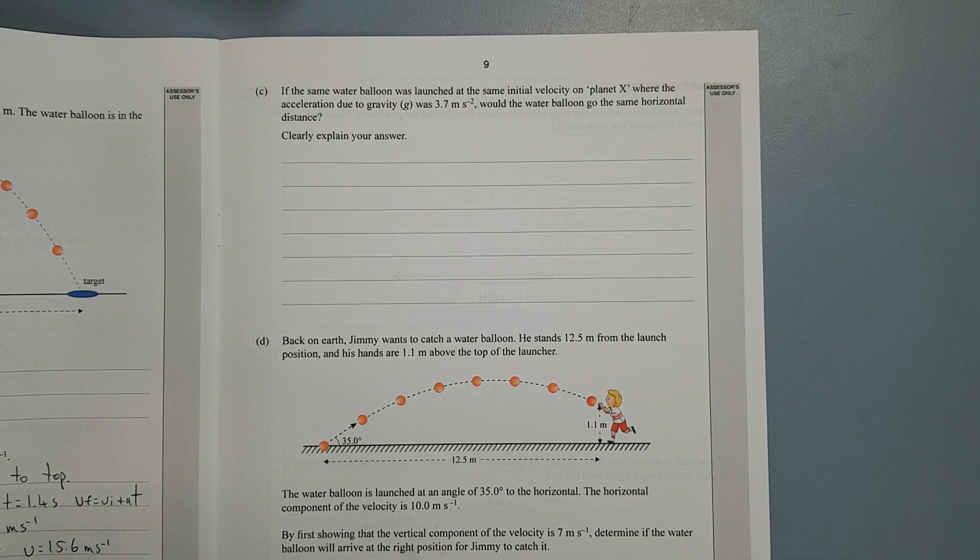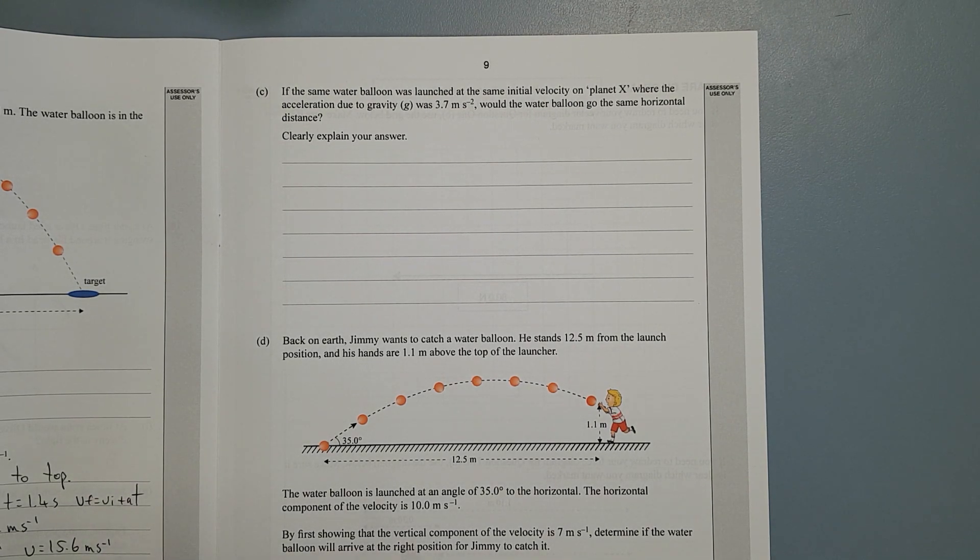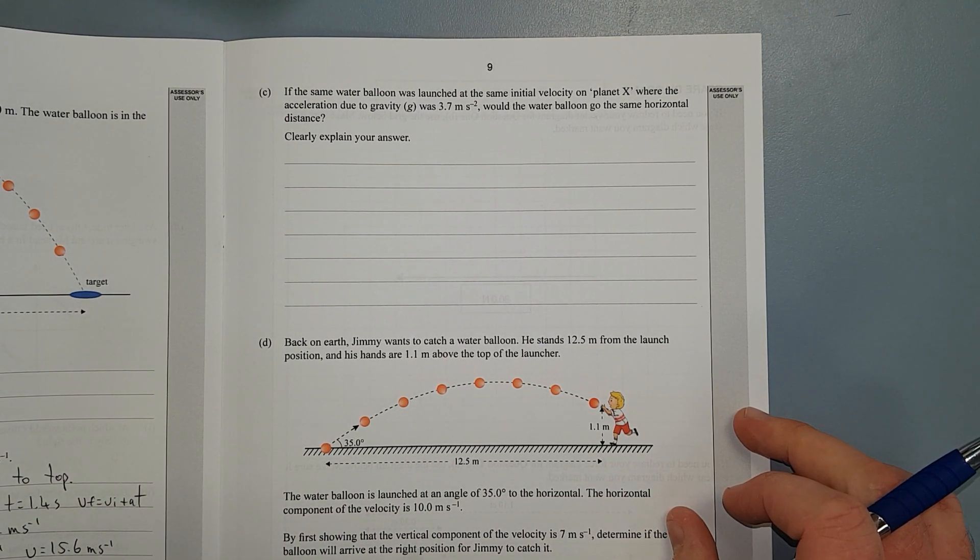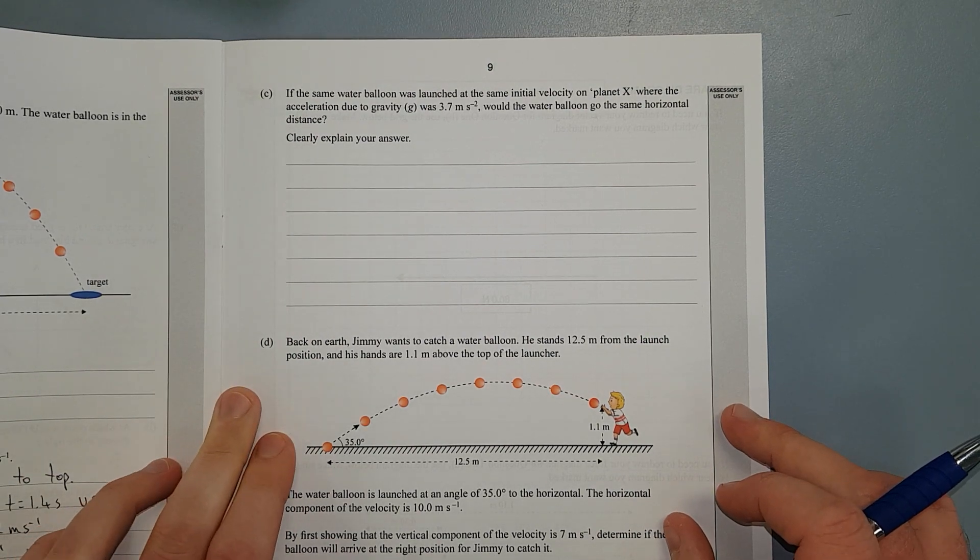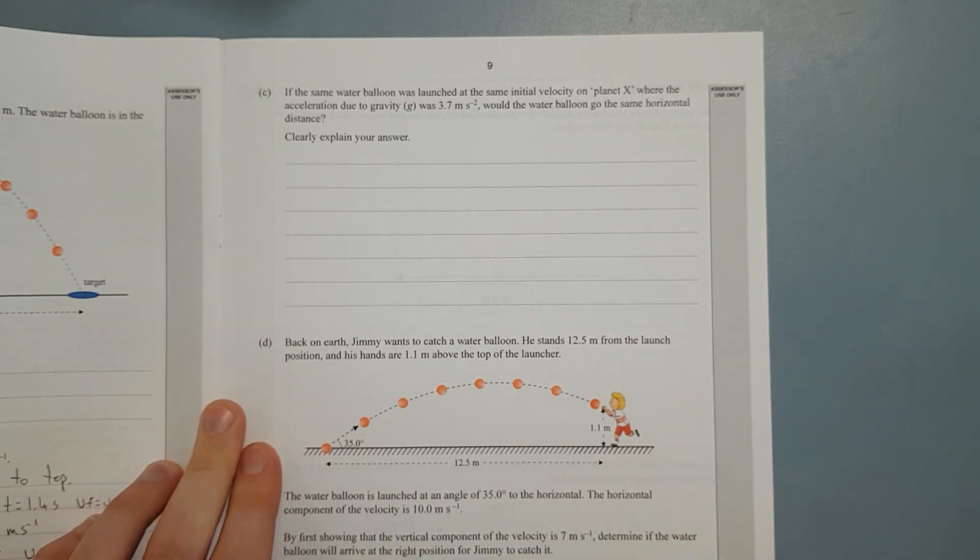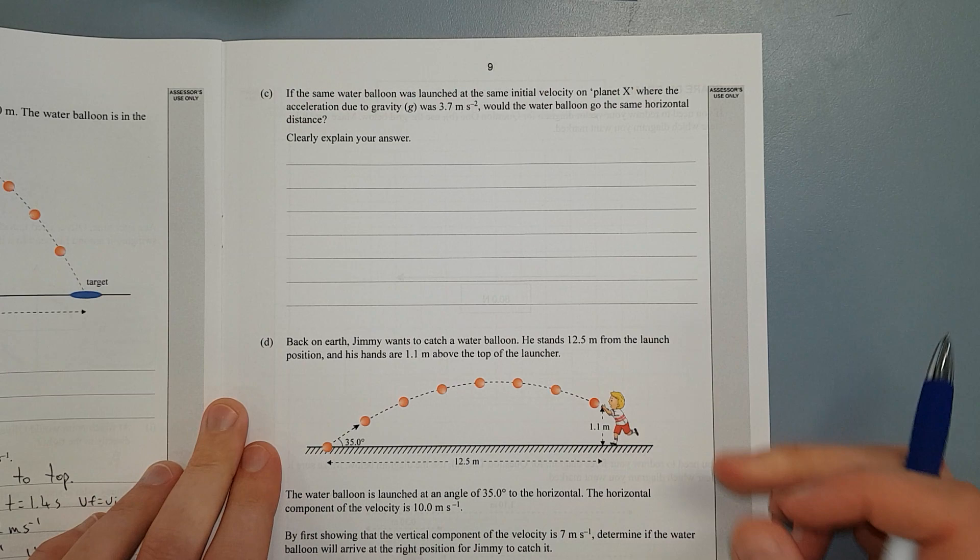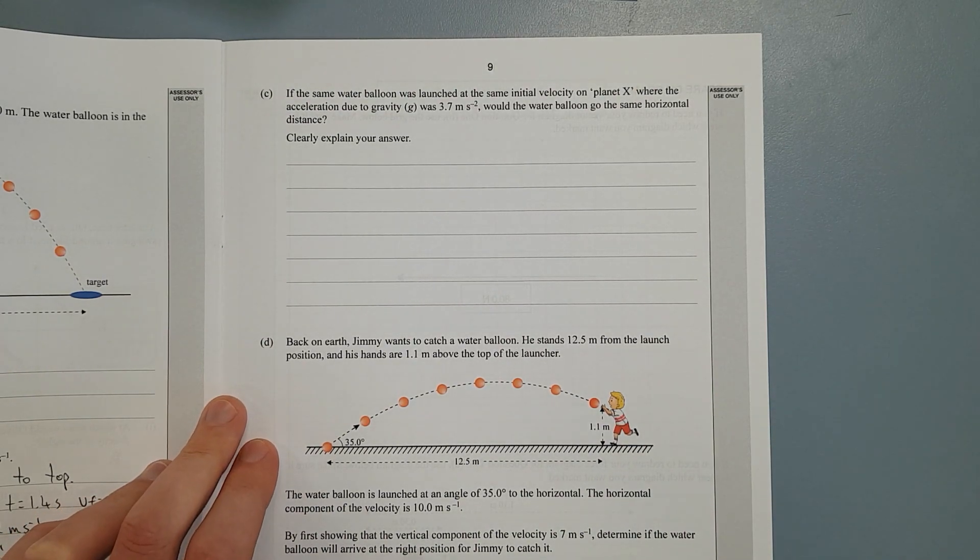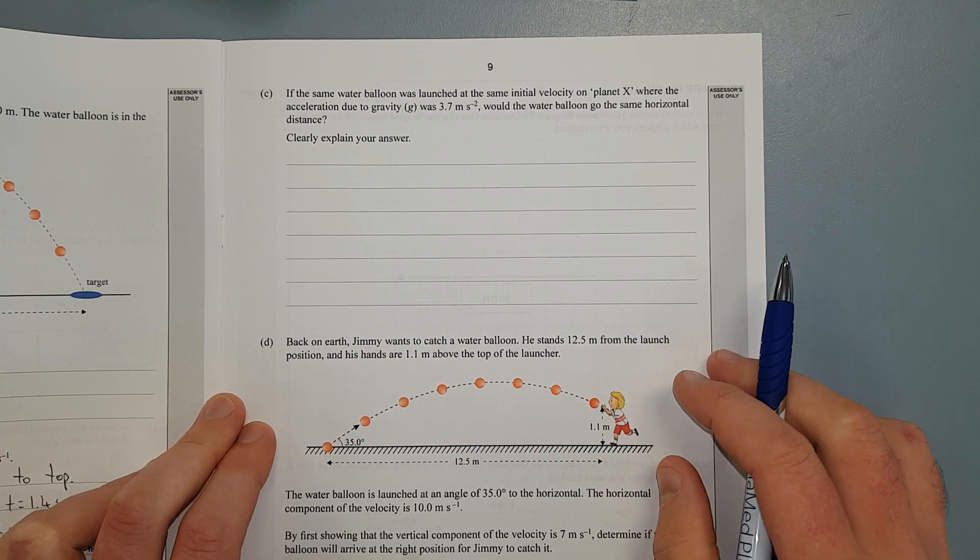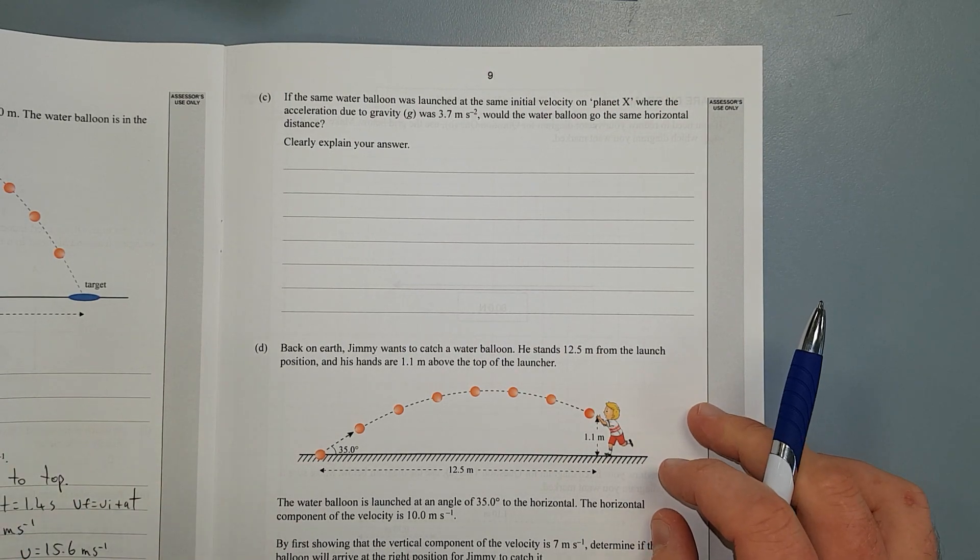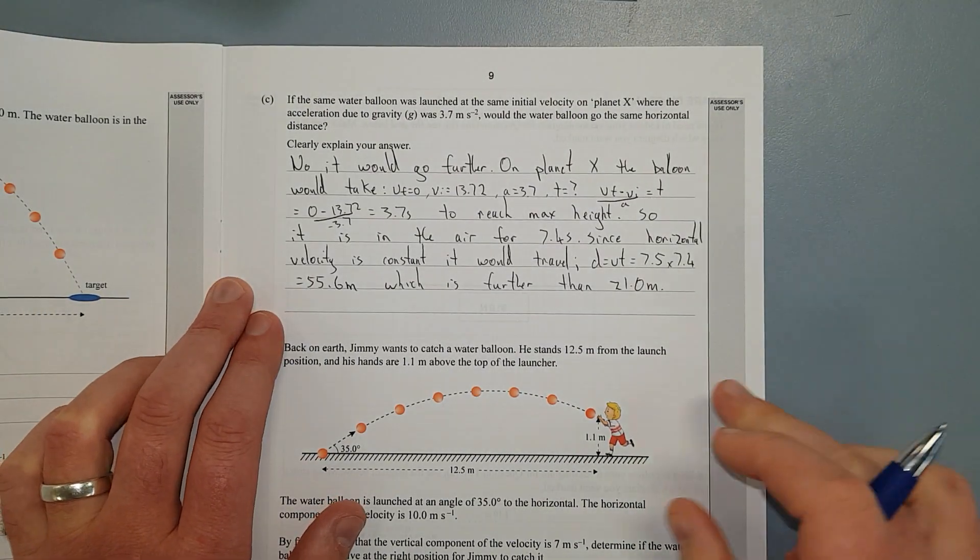Next question. If the same water balloon was launched at the same initial velocity on planet X, where the acceleration due to gravity was 3.7 metres per second, would the water balloon go the same horizontal distance? Clearly explain your answer. Well, no, it wouldn't. It would go a whole lot further. If gravity is less, you can throw things further. If you're on the moon and you jump up, you can jump a whole lot higher. I think Mars is 3.7. So I'm going to pause the video, write the answer, and then discuss.